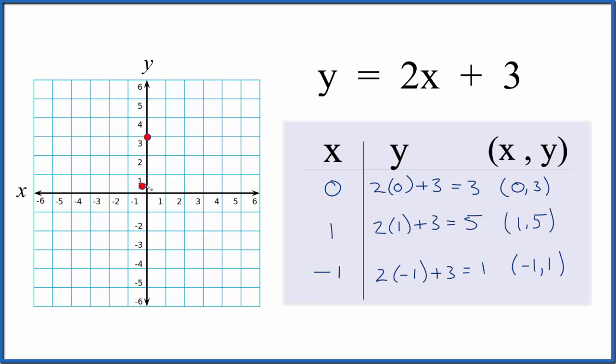I have 1,5. So I go over 1, and then 1, 2, 3, 4, 5. So I have 2 points. I could graph with 2 points. I'd like to get a third point just to make sure that I've done these correctly.